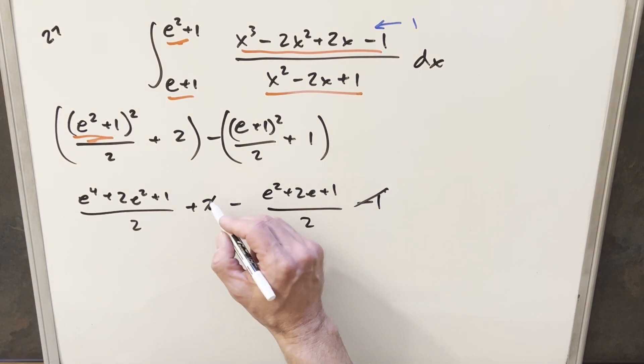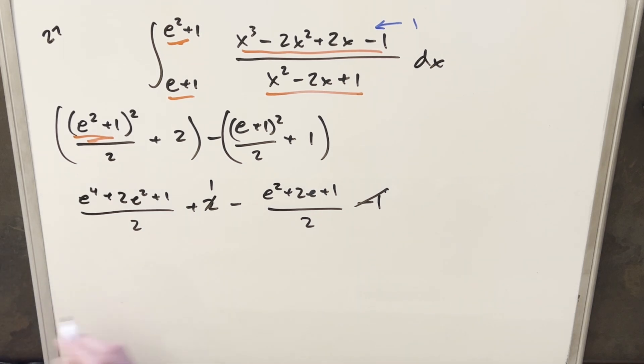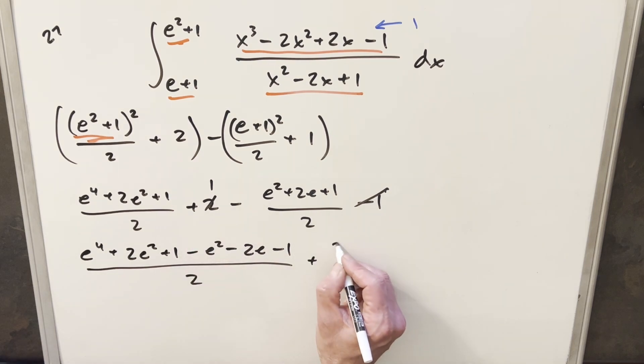Let's see, 2 minus 1, this is just going to become a 1. So putting this together, we have e to the fourth plus 2 e squared plus 1, then this stuff, minus e squared minus, distributing in the minus sign, minus 2 e minus 1 all over 2, and then for this plus 1, let's write it as 2 over 2 so I can combine it with all this stuff.